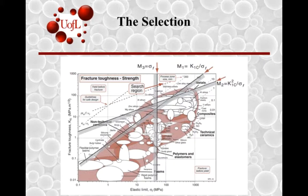We end up plotting fracture toughness against elastic limit, or yield strength. The first material index would be a slope of one with a working thickness of 100 millimeters, meaning a crack could actually be 100 millimeters long and still won't fail. The second one is the material index for the large pressure vessel, which has a slope of 0.5.